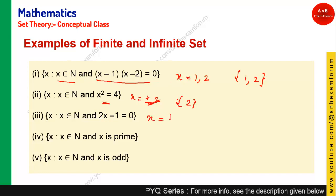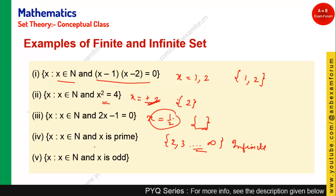If x = 1/2 and x must be a natural number, this set will have no element — it is an empty set. For x belonging to natural numbers where x is prime, there are many natural numbers that are prime like 2, 3, 5, and so on, so this becomes an infinite set. Similarly, x belonging to natural numbers where x is odd — there are many odd numbers — so it is again an infinite set.